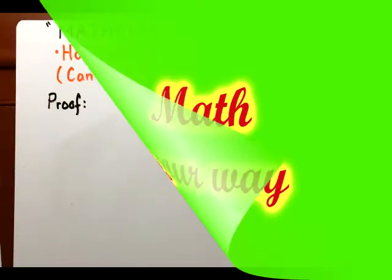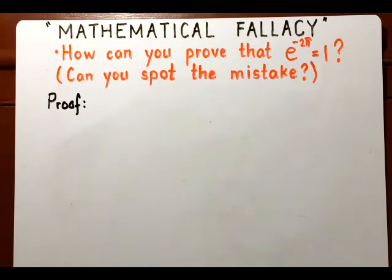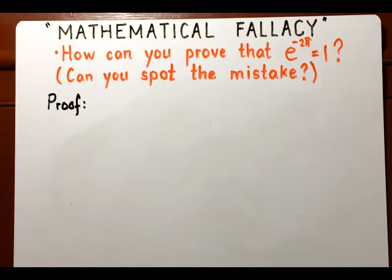In this video I will be discussing another mathematical fallacy: how can you prove that e to the power negative 2π is equal to 1? Can you spot a mistake? If you can spot a mistake, please leave your comments down below.